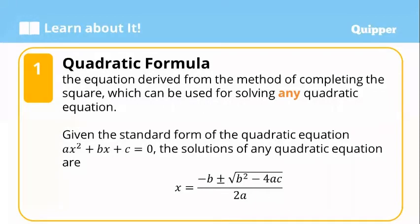Now let's define the quadratic formula. It is the equation derived from the method of completing the square, which can be used for solving any quadratic equation. Given the standard form ax squared plus bx plus c equals 0, the solutions are x equals (negative b plus or minus square root of (b squared minus 4ac)) divided by 2a. Remember this formula.